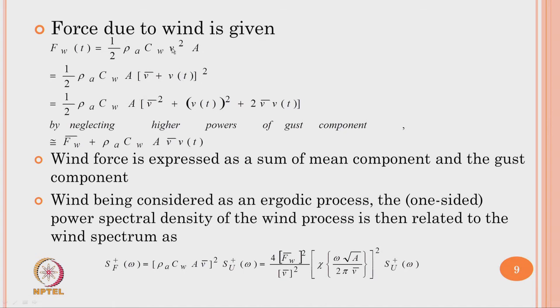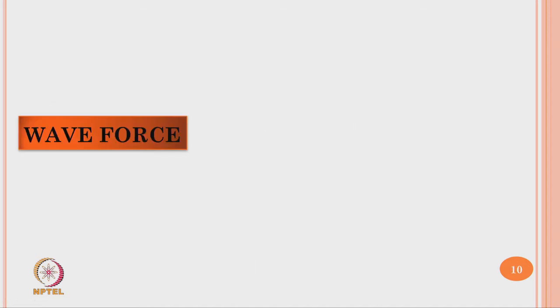Since V has two components — a static mean component and a gust component — expanding the equation and neglecting higher powers of the gust component gives a simplified expression. The wind force is therefore expressed as a mean component plus a gust component. Wind being considered as an ergodic process, the one-sided power spectral density function of the wind process is related to the wind spectrum as given by the corresponding equation.